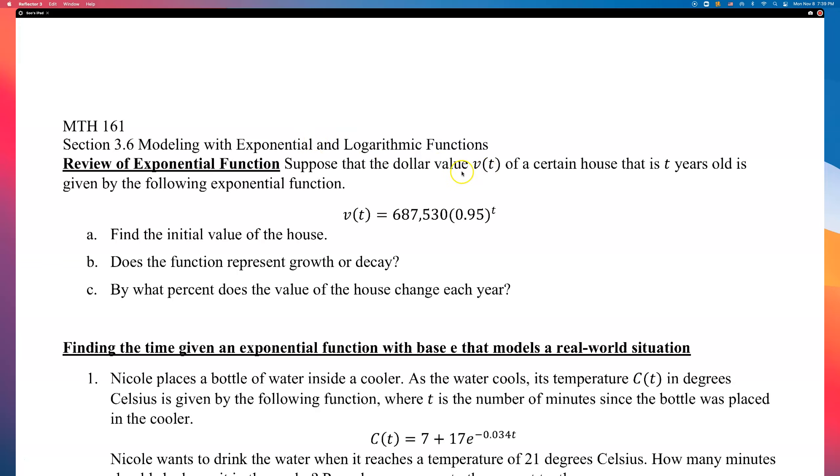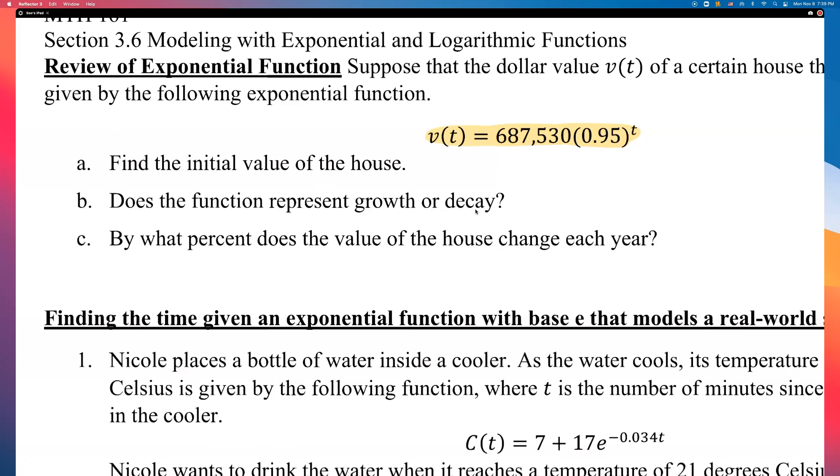So, suppose that the dollar value v(t) of a certain house that is t years old is given by the following exponential function. If you're just given this equation right here, do you remember what each of these numbers represent? Like that very first number that you see, right after that equal sign.